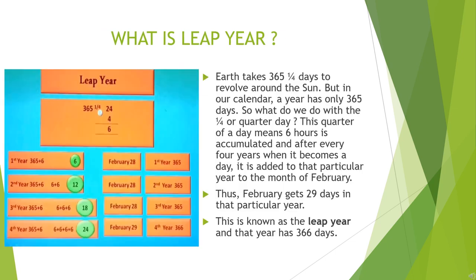The earth takes 365 and one-fourth days to revolve around the sun, but in our calendar a year has only 365 days. So what do we do with that one-fourth or the quarter day? This quarter of the day is accumulated — that is, added — and after every four years, when it becomes a full day, it is added to that particular year in the month of February. Thus February gets 29 days in that particular year. This year is known as the leap year and it has 366 days. The year 2020 was a leap year.